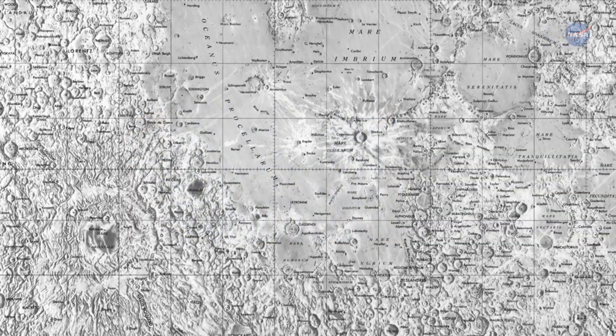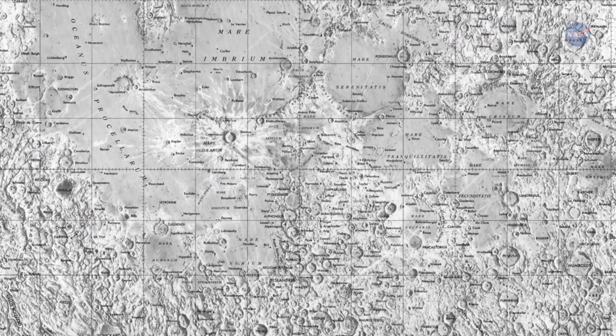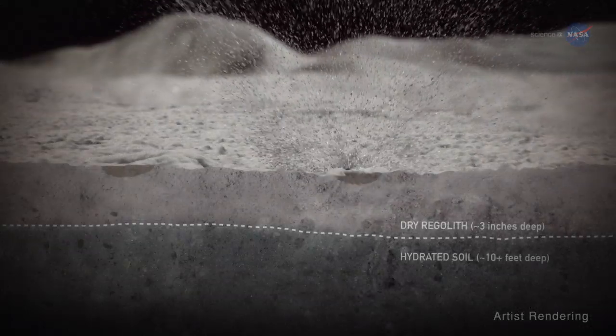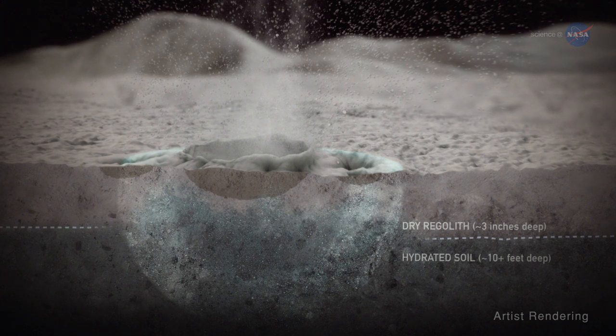Some believe that the water and other volatiles could be remnants of comets and asteroid impacts over billions of years. Others point to recent meteoric showers that can be seen producing water vapor.